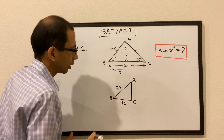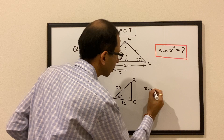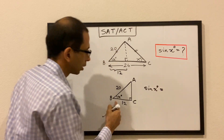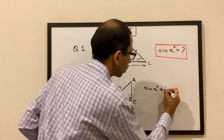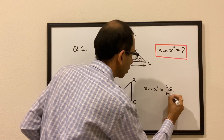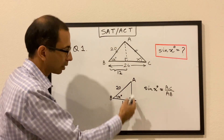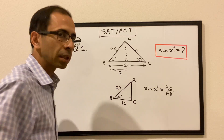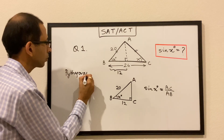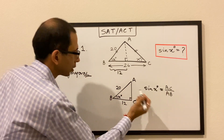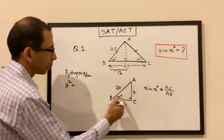We have to find sine of x. Sine of x is nothing but AC over AB — opposite over hypotenuse — so AC over AB. The length of AB is already 20; we just have to find the length of AC, and we can use the Pythagorean theorem. Let's suppose this side is y, so y² + 12² = 20².